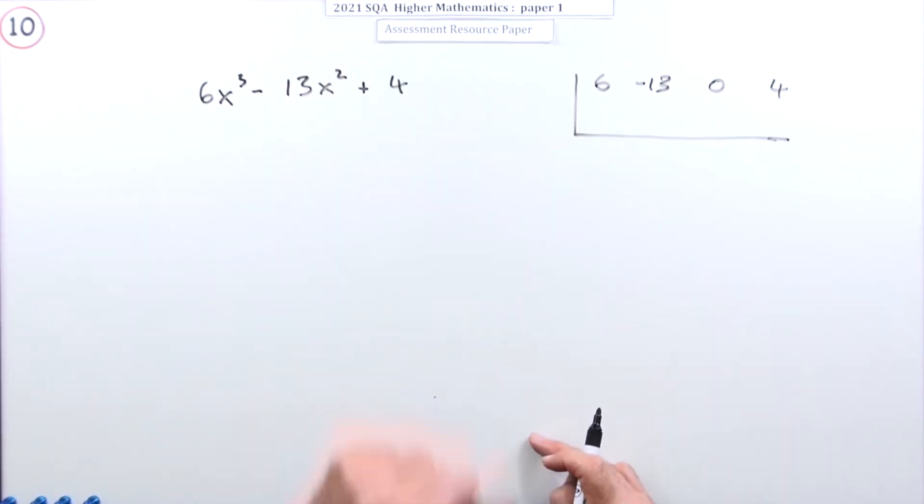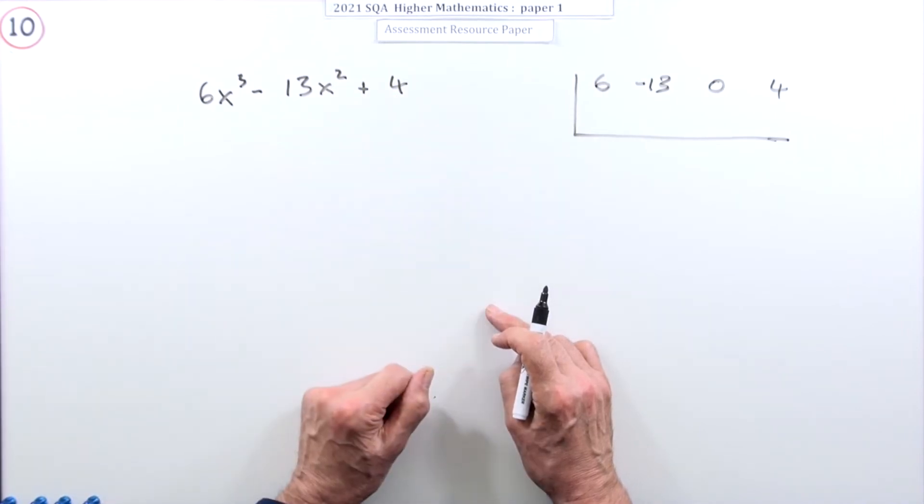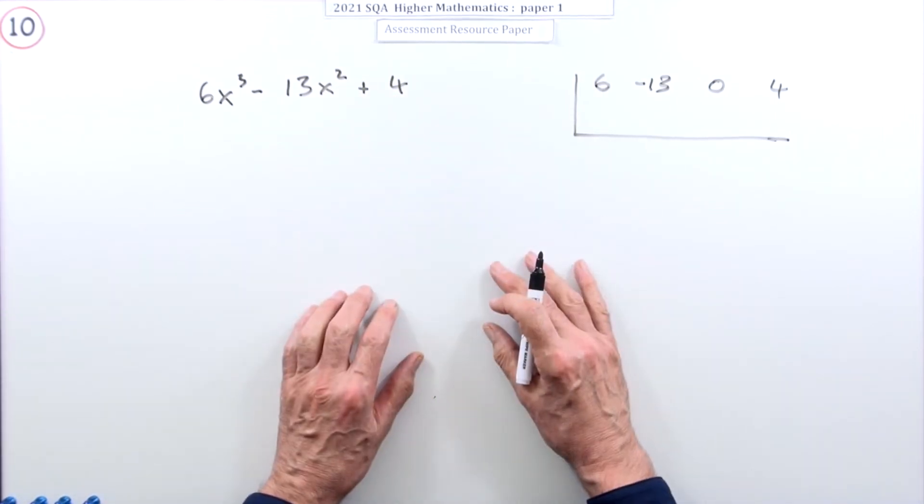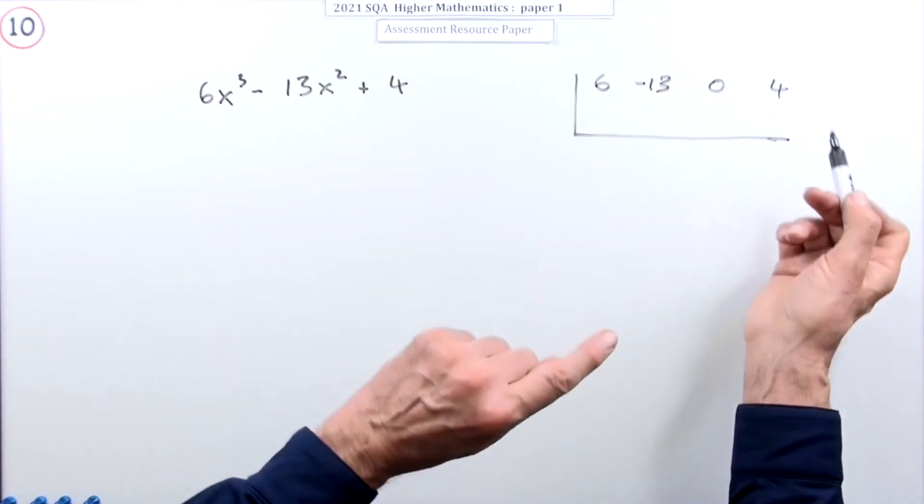So whatever these numbers are, they've got to multiply together to give four. So what we've got: we've got one, two, and four, plus the plus and minus of each of them.